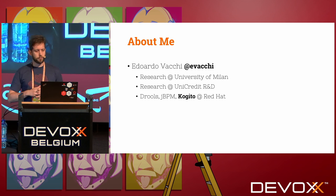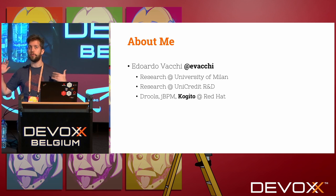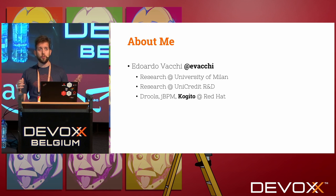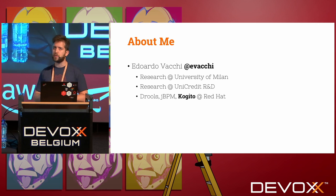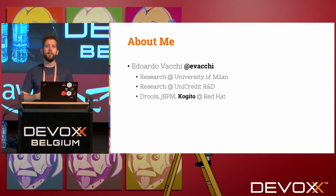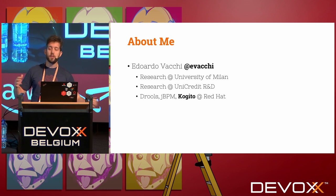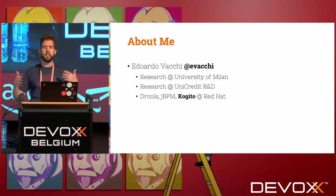Now I'm at Red Hat, where I work with Drools, JBPM, and a new project called Kogito. Drools is a rule engine, JBPM is a workflow engine, and Kogito takes both rules and JBPM together. The rule engine is both a language and a streaming engine, and Kogito takes all of those and puts them in the cloud — doing some language compilation along the way.